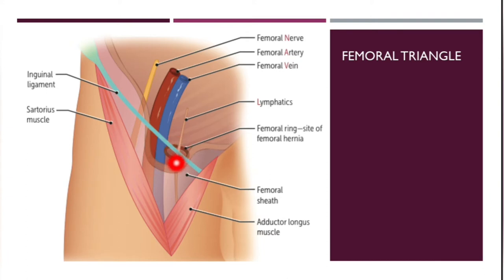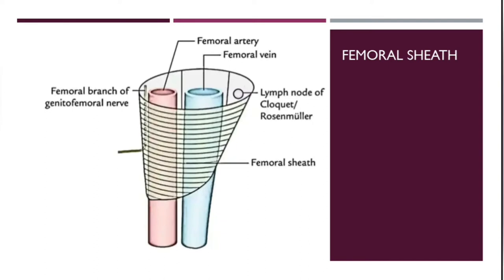You also find lymphatics. There is a sheath here called the femoral sheath. Inside this sheath you can see the femoral branch of the genitofemoral nerve, femoral artery, femoral vein, and the lymph node of Cloquet or Rosenmuller.